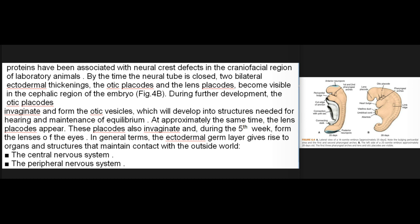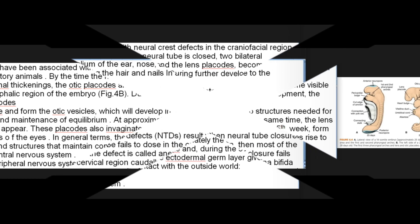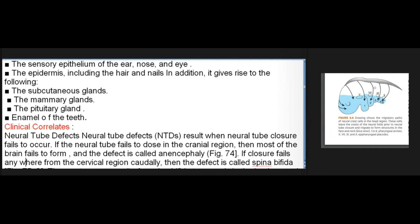In general terms, the ectodermal germ layer gives rise to organs and structures that maintain contact with the outside world: the central nervous system, the peripheral nervous system, the sensory epithelium of the ear, nose, and eye, the epidermis including the hair and nails. In addition, it gives rise to the subcutaneous glands, the mammary glands, the pituitary gland, and enamel of the teeth.